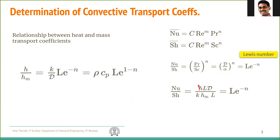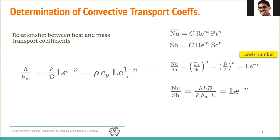In other words, h/h_m can be written as k/D times Le^(1−n). And k/D, if you multiply and divide by ρc_p, you get α/D, which is again the Lewis number. So h/h_m is nothing but ρc_p times Le^(1−n). This means that if we determine the mass transport coefficient by some experiment, substituting into this expression, we can determine the heat transfer coefficient, or vice versa.